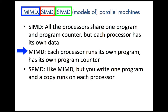MIMD, on the other hand, stands for Multiple Instruction Multiple Data. In a MIMD machine, each processor runs its own program, has its own program counter, its own point of control. They operate independently of one another. They do communicate, if necessary, in MIMD machines, either by sharing data in memory or by sending messages. We'll talk more about message passing soon.